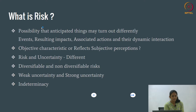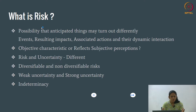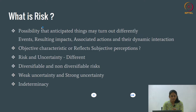Basically, what is risk? We usually anticipate some things to happen but they don't happen the way we think. So the possibility that the anticipated things may turn out differently is called a risk. The anticipated things can be events or the impacts resulting from those events. There is always a debate on whether risk is an objective characteristic or reflects subjective perceptions — it may differ from perspective to perspective.